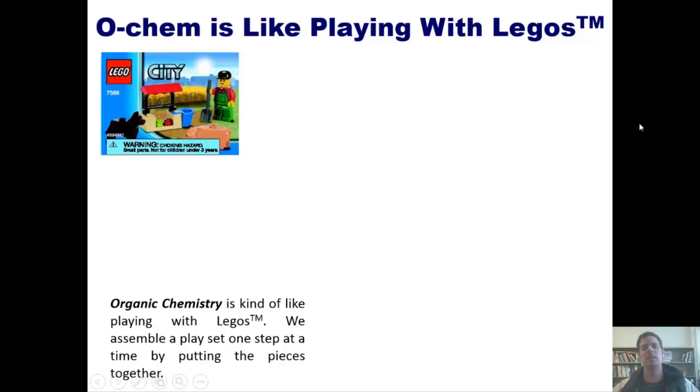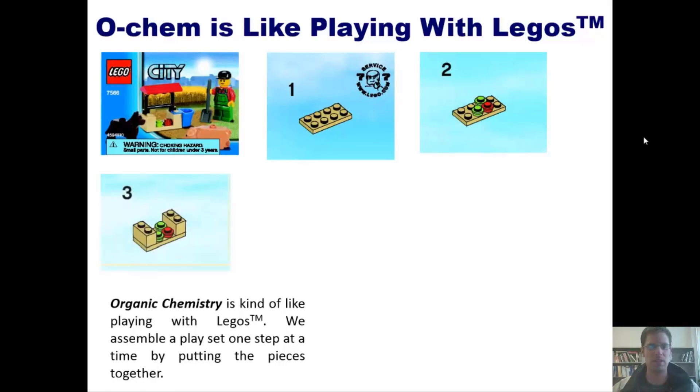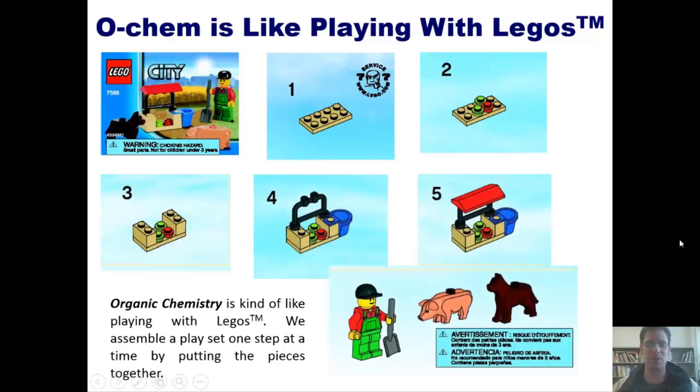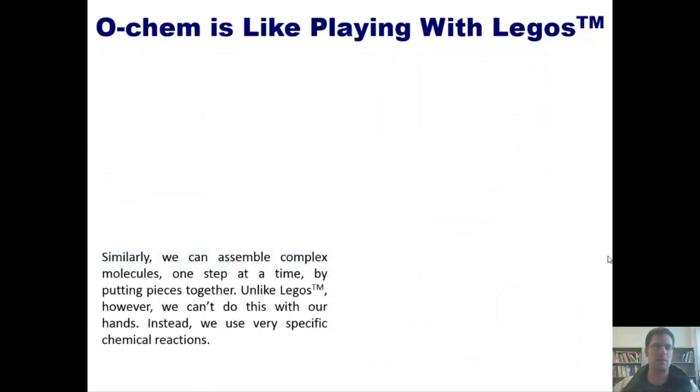In the case of this farmer with his cute little watering hole and his dog and his pig, you'd put them together according to these instructions, which I also stole from the internet. You begin by taking this block and adding these pieces to it, and then those pieces, these pieces, those pieces, and then you bring in the farmer and his animals. Isn't that exciting?